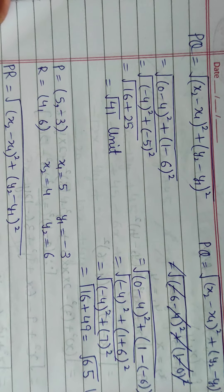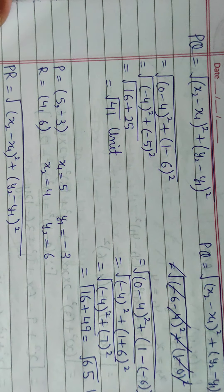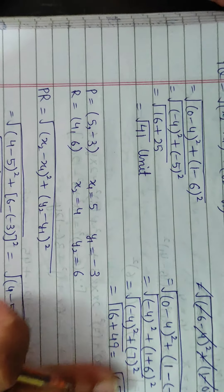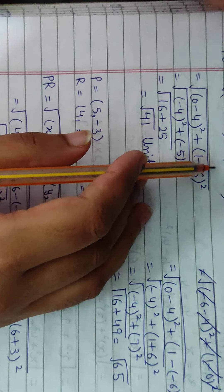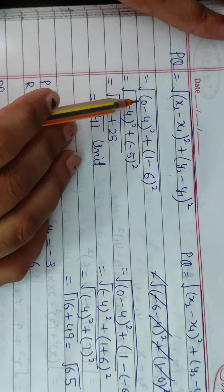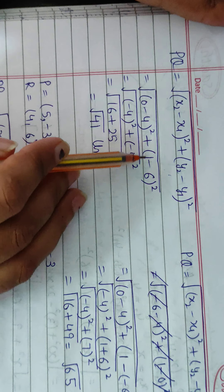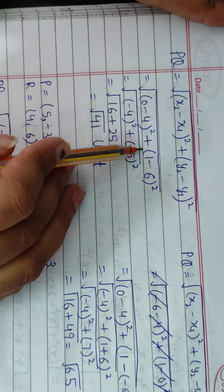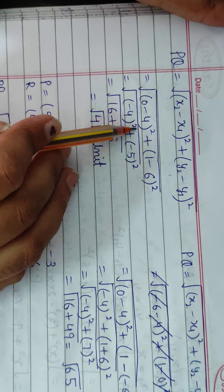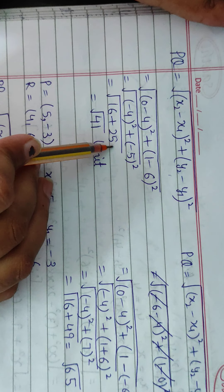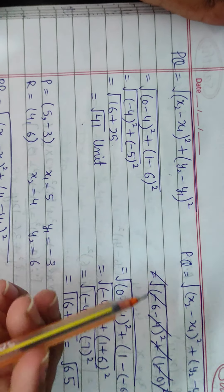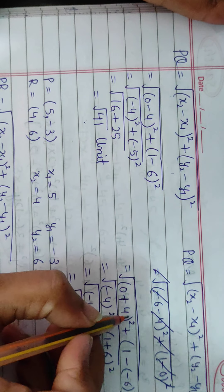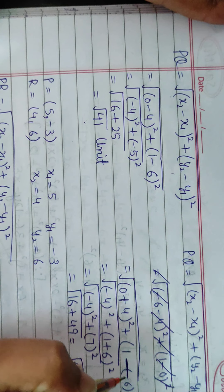Now applying the distance formula for QR with x = 4: (0 - 4)² + (1 - 6)². 0 - 4 = -4, squared is 16. 1 - 6 = -5, squared is 25. 16 + 25 = 41, so QR = √41.